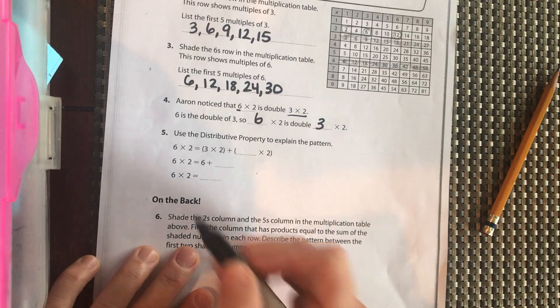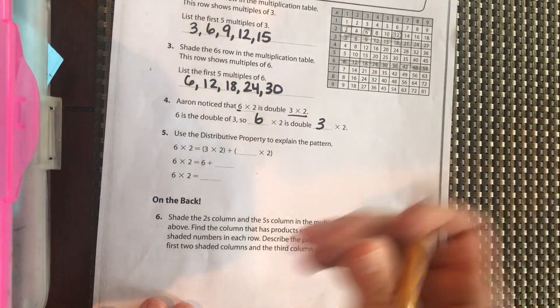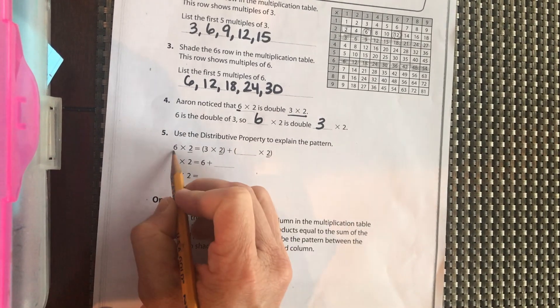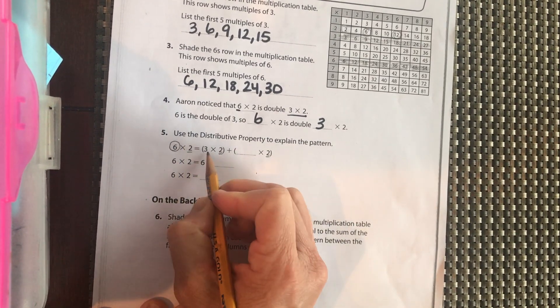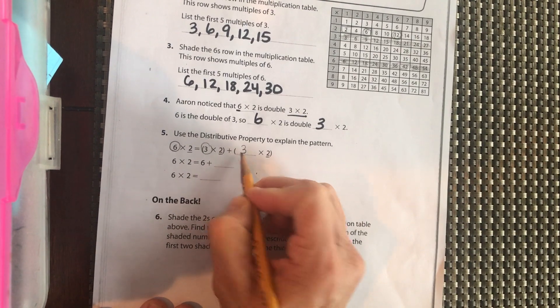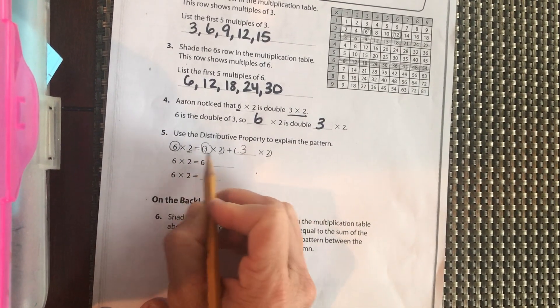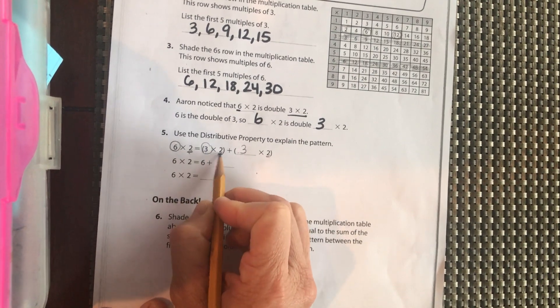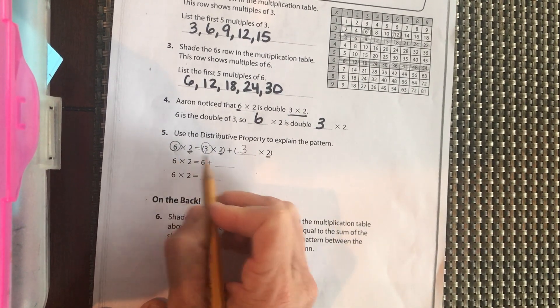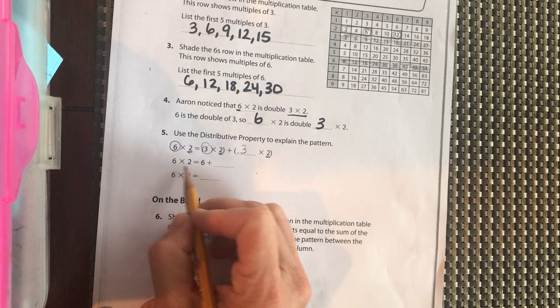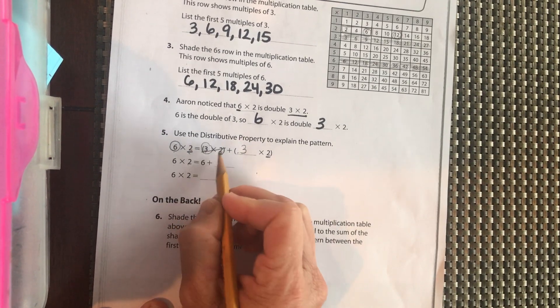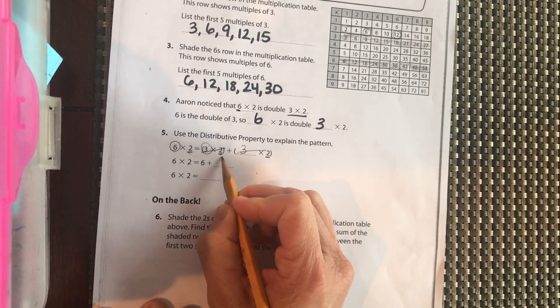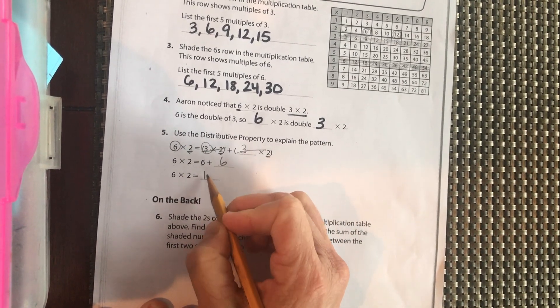So we're going to use our distributed property. 6 groups of 2. Our 2 stays the same. Our 6 is broken up into 3 and 3. So the 6 gets broken up into 3 and 3. The 2 stays the same. Remember, one of them needs to stay the same. And then you can break up this one into 3 and 3. So 6 groups of 2, they just brought that down. So this 6 groups, 3 groups of 2 equals 6, and 3 groups of 2 equals 6, 6, and 6 plus 6 equals 12.